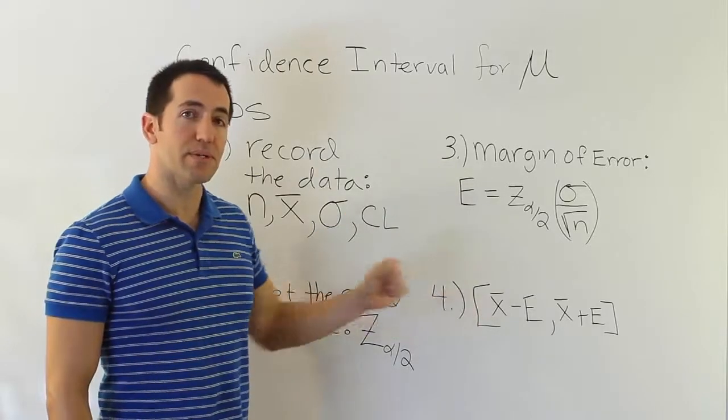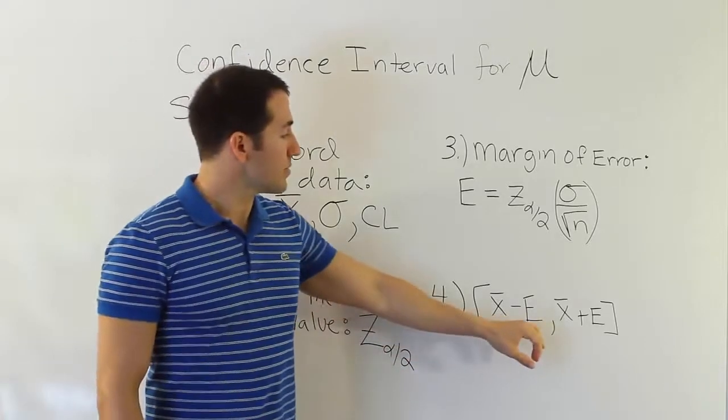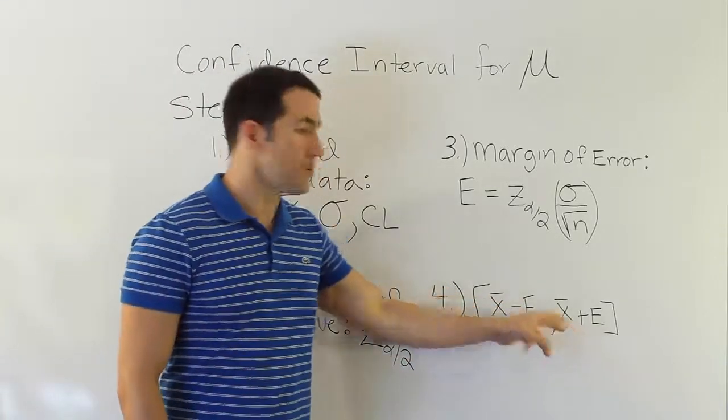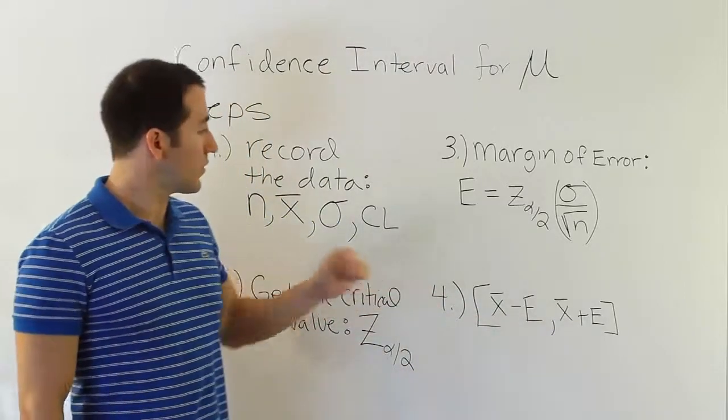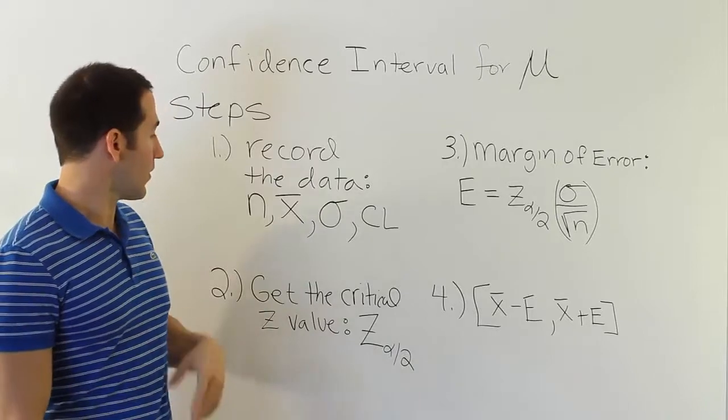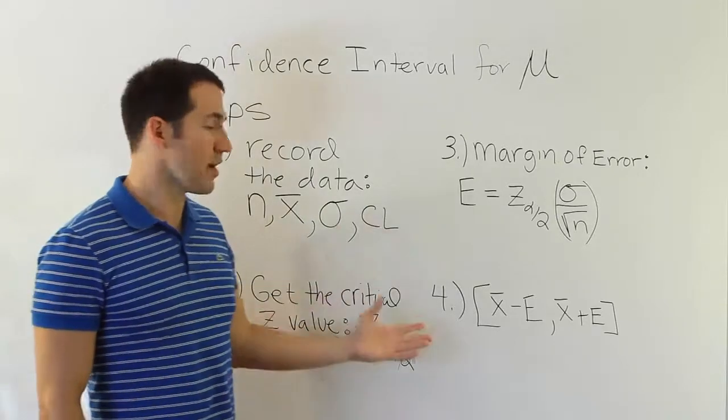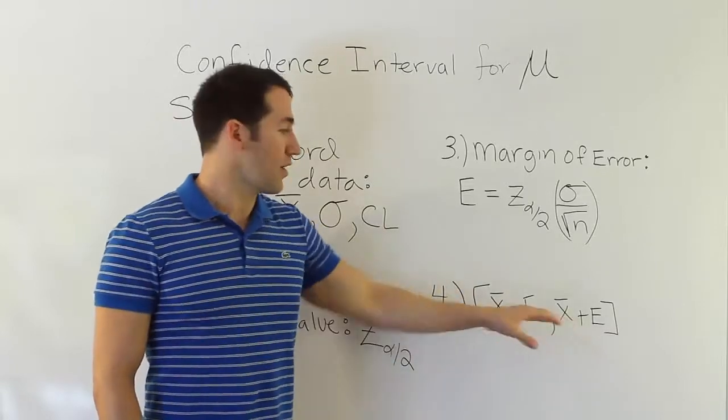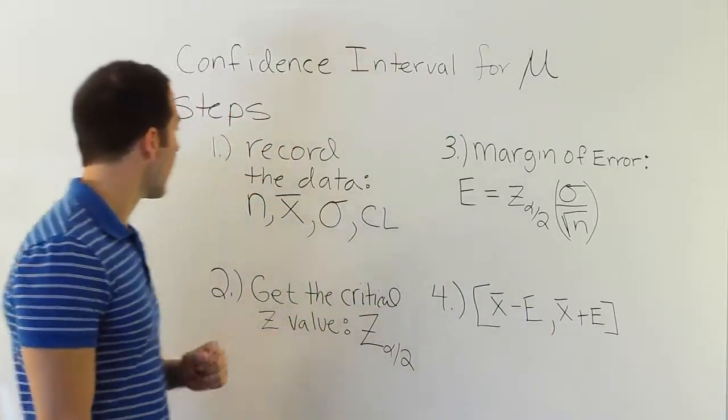You go to step 4, which is the easiest step of the process. You simply subtract that error from the x-bar and add that error to the x-bar. And when you do that, you end up with your interval. And essentially what we'll say then is that we are x percent confident, whatever the confidence level is, that the population mean is within that interval, between those two numbers.